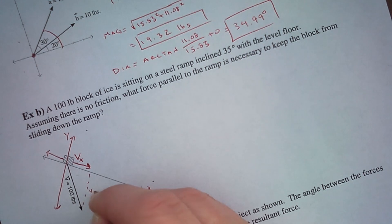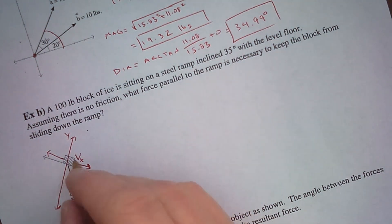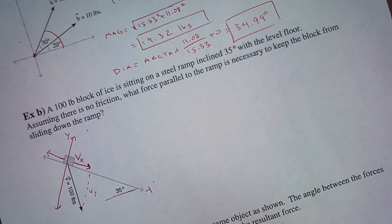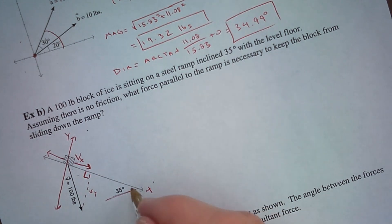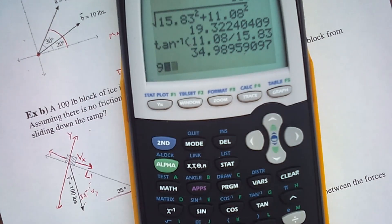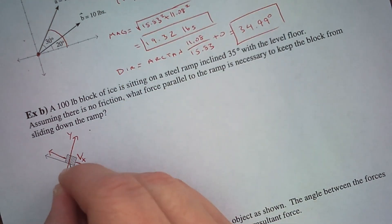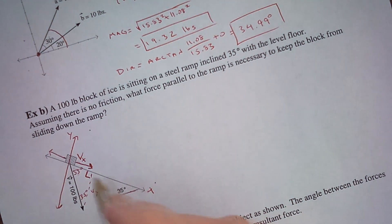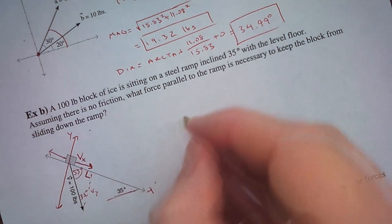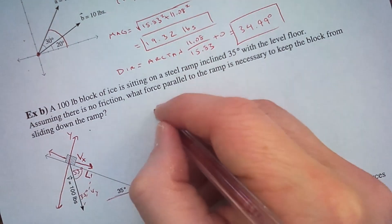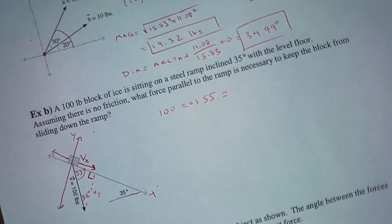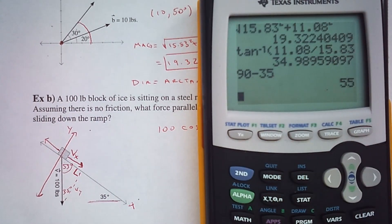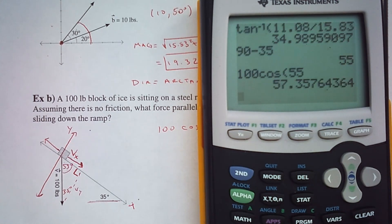Now I need to know this angle measure. I've got 90 degrees here, and right here is going to be 35 degrees. How many degrees are left? I've got 90, which leaves 90 remaining in the triangle, and 90 minus 35 is 55. So there's a 55-degree angle here. I can use that to find the x-component. An x-component uses cosine. With 100 being the hypotenuse, 100 cosine 55 will give me the x-component of this vector. So 100 cosine 55 is 57.36, and that is in pounds.